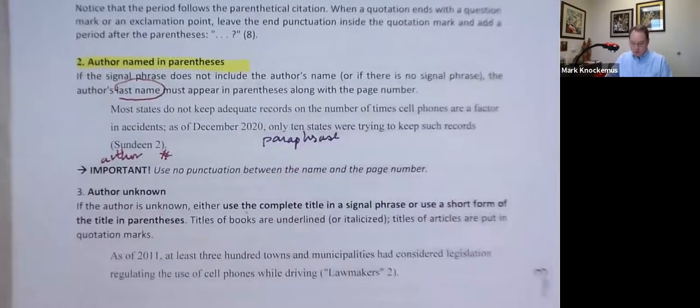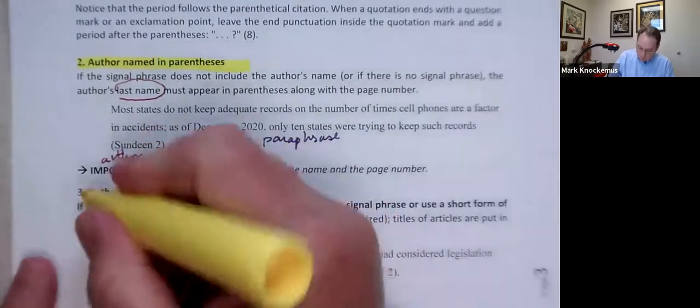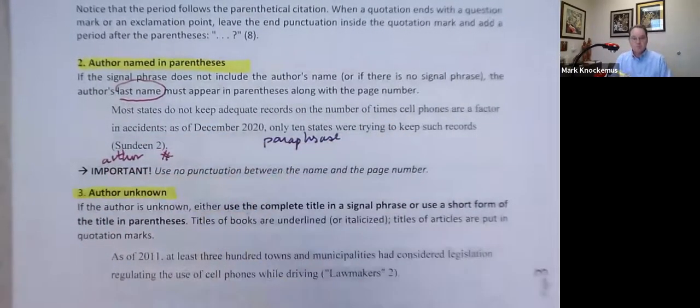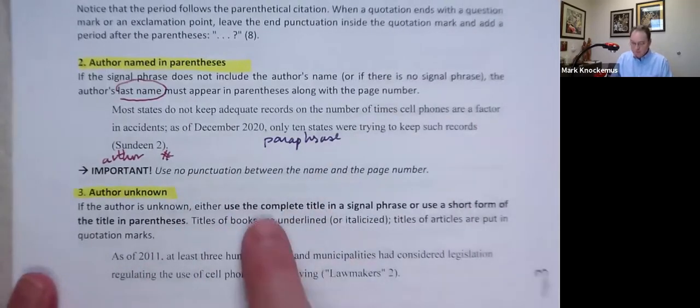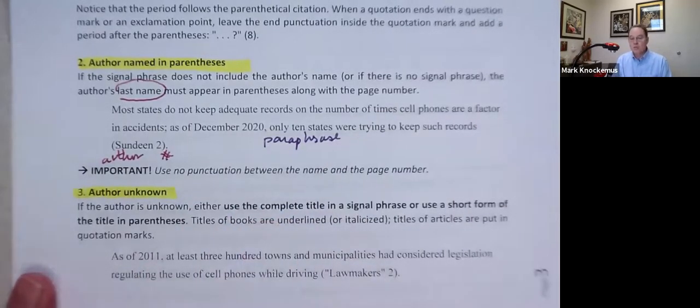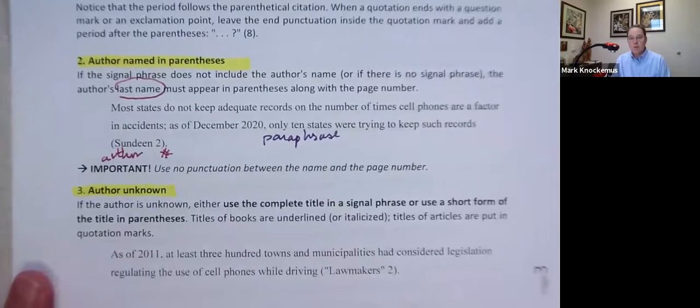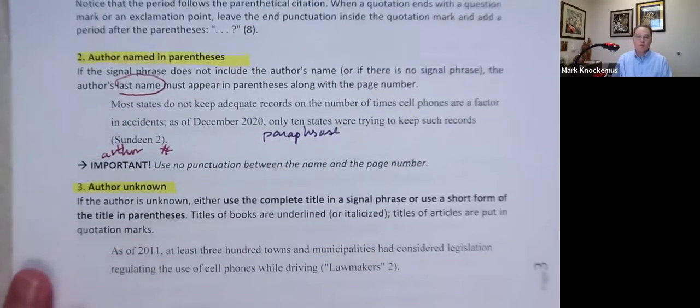Sometimes, believe it or not, you'll have an article that the author's not listed. So then what we want to do is you always want to use the complete title in the signal phrase or a short form of the title in parentheses. So here's an example. As of 2011,